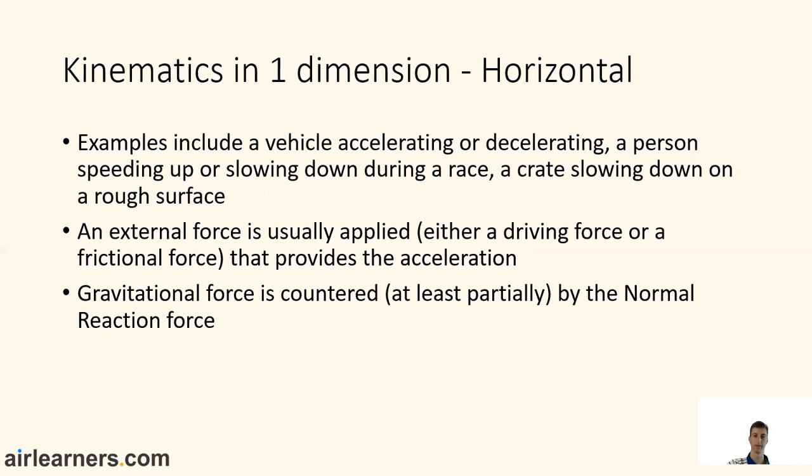Okay, kinematics in one dimension, still in one dimension but this time horizontally. Examples include a vehicle accelerating or decelerating, a person speeding up or slowing down during a race, a crate slowing down on a rough surface. So there are lots of examples you can think of along the horizontal plane. But with those, because it's only in the horizontal, an external force has to be applied because gravity is countered, at least partially, by the normal reaction force. So we'll often get, let's say a car, the engine provides a force. A person, their feet on the ground produce the force. And for the crate, it would be the friction provides the retarding force. So those are kind of the key points for horizontal motion.